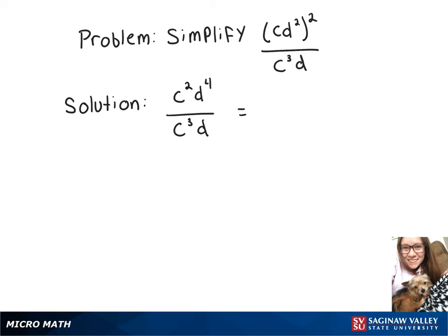Now we can subtract our exponents that have the same base, giving us c to the 2 minus 3 times d to the 4 minus 1.